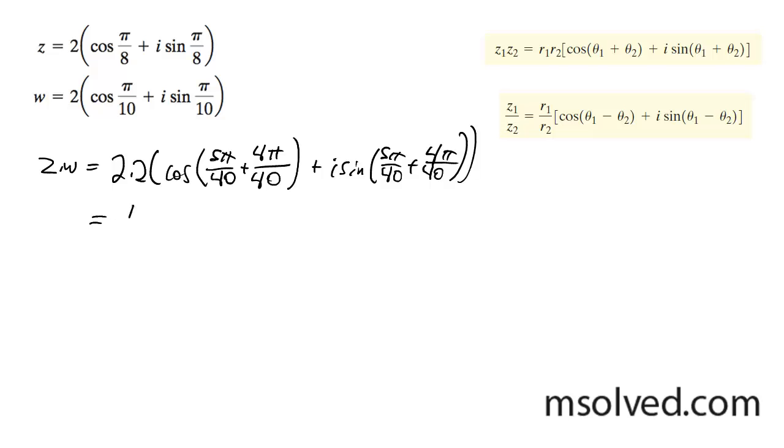And we end up with 4 times the cosine of 9 pi over 40 plus i sine 9 pi over 40. Okay, that's for that.